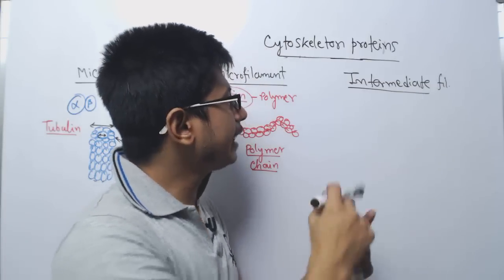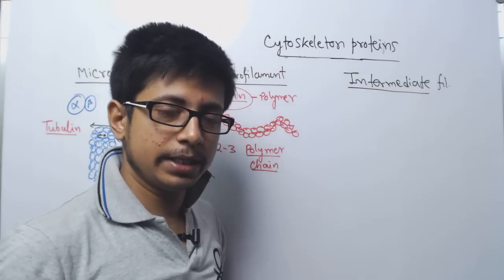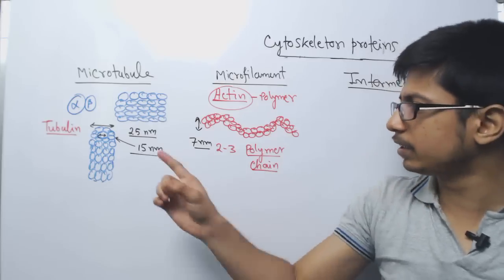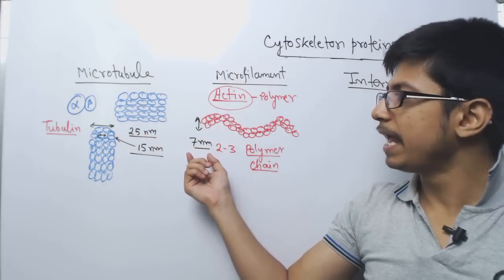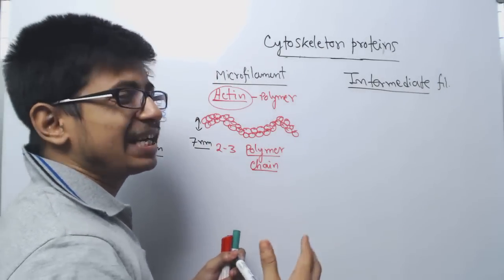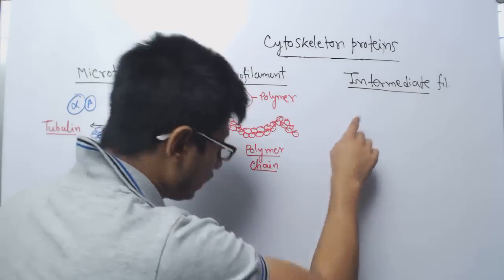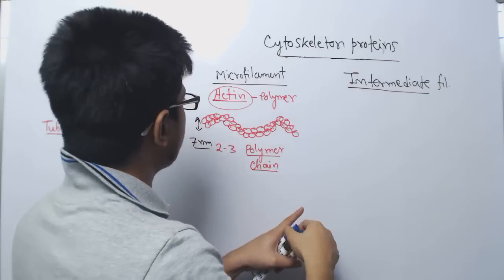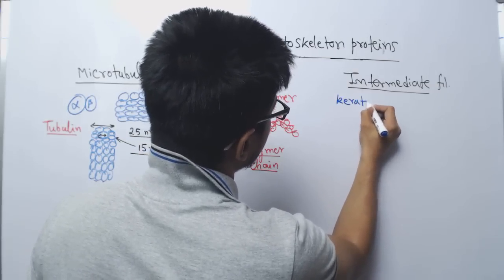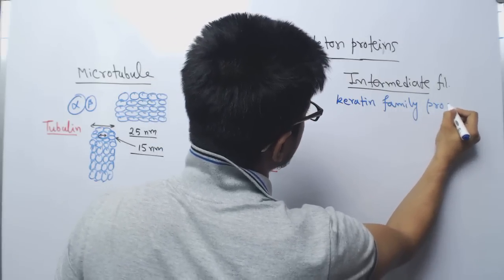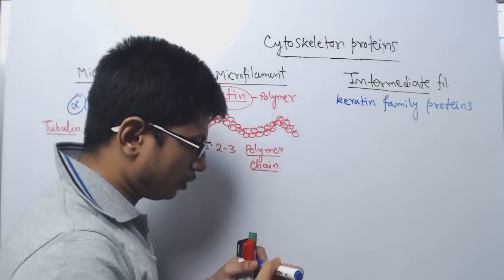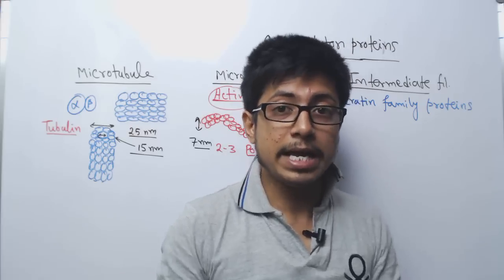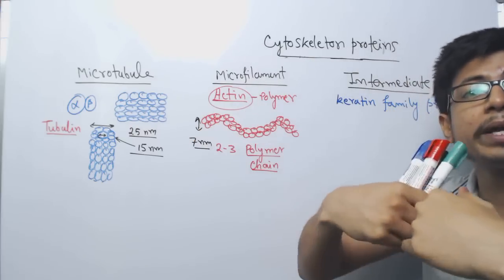The third type is the intermediate filament. As the name suggests, the diameter of the intermediate filament is somewhere between the microtubule and the microfilament diameter. Microtubule is thick at 25 nanometres, microfilament is very thin at 7 nanometres, and intermediate filament is in the range of 10 to 12 nanometres. Intermediate filament is produced by different types of keratin family proteins. A polymer is produced from these keratin family proteins, which are fibrous proteins that join together to make a polymer.